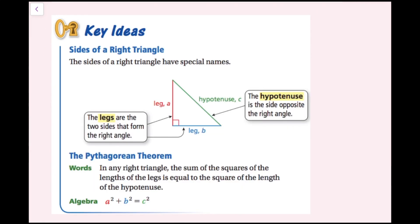Sides of a right triangle — the sides of a right triangle have special names. We have one of the legs, which we can call leg A, the other one would be leg B, and we have the hypotenuse. The legs are the two sides that form the right angle, and the hypotenuse is the side opposite the right angle. The hypotenuse is always going to be the longest side, and you know it's the hypotenuse because the right angle is basically pointing in the hypotenuse's direction — it's opposite the right angle.